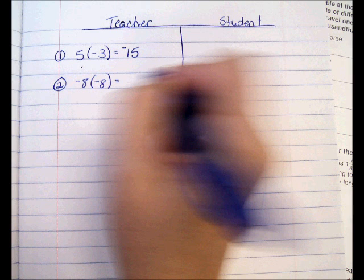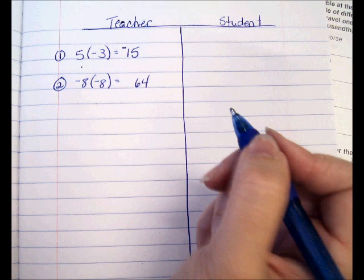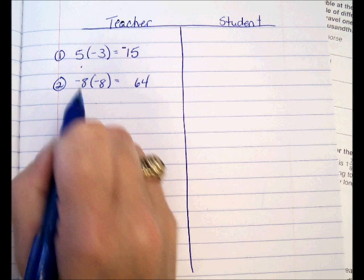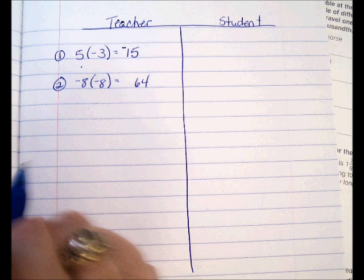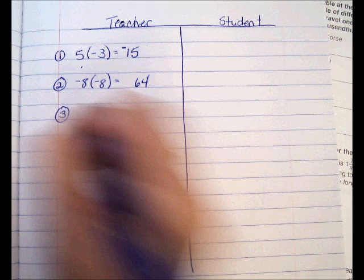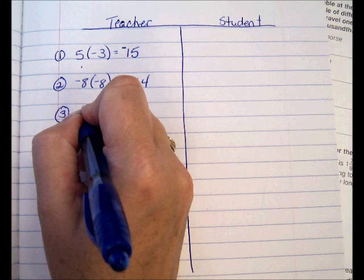Now try negative 8 times negative 8: do the multiplication — 8 times 8 is 64. Same signs, so the answer is positive 64. Hate to hate is a good thing — two gangsters getting along.